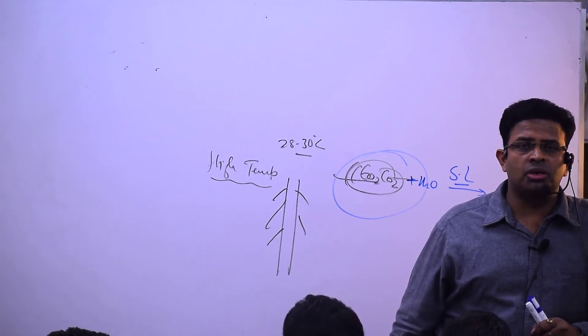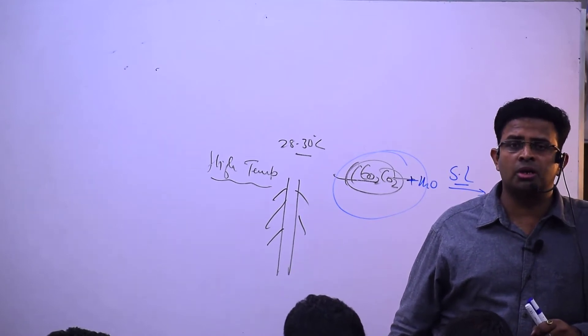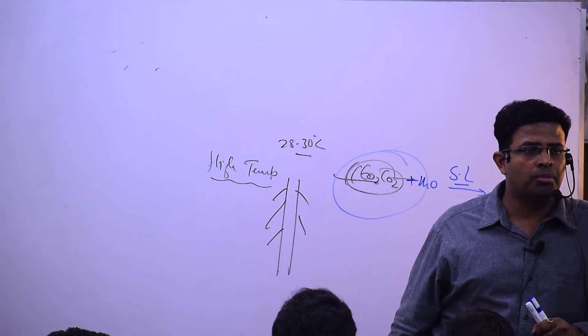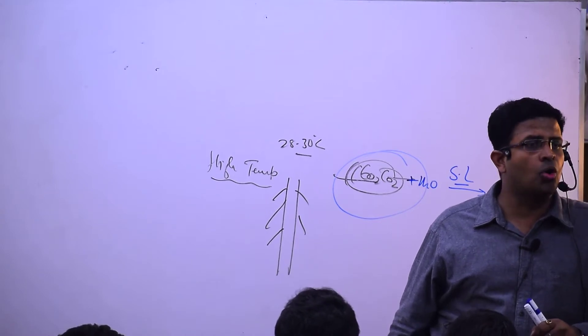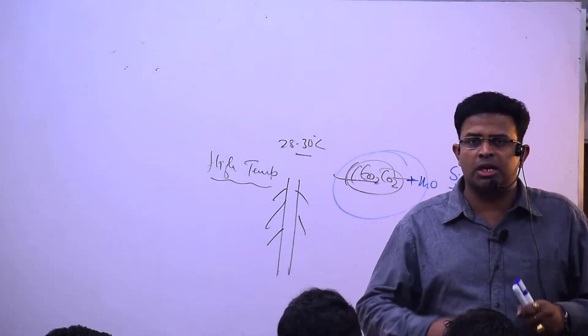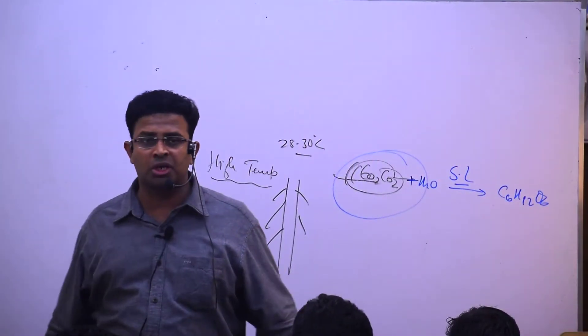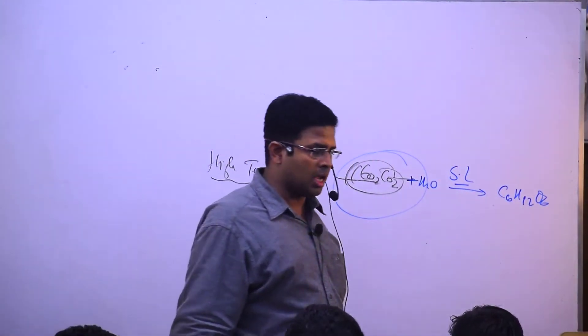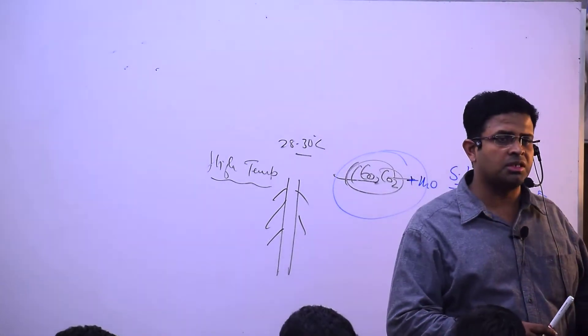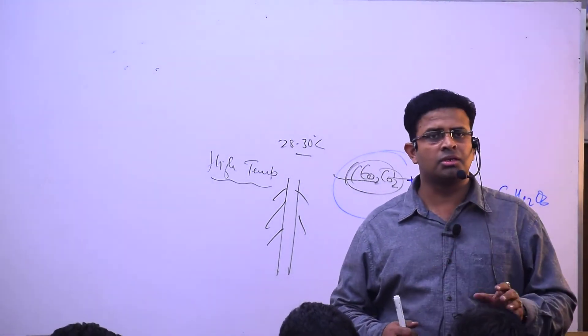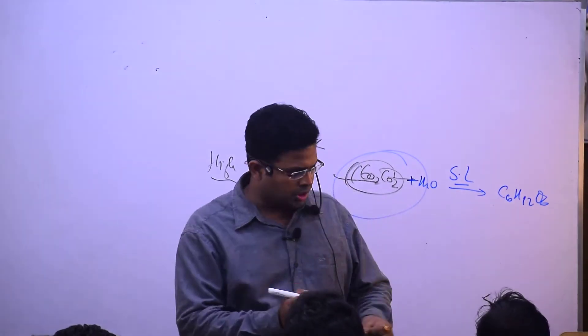Therefore, very high temperature leads to death of plants due to coagulation - coagulation means getting together of protoplasmic protein, and that leads to death of plants.